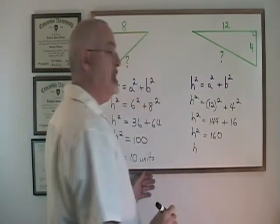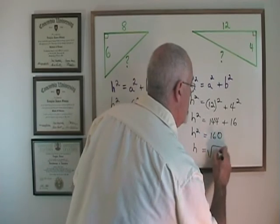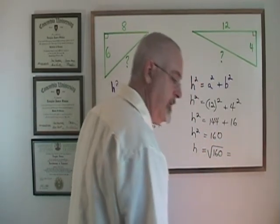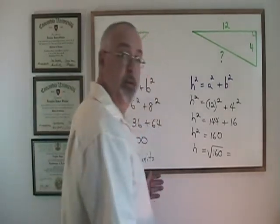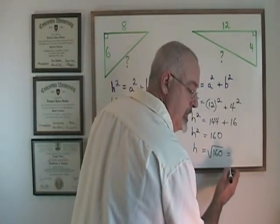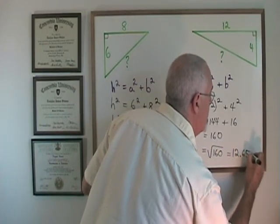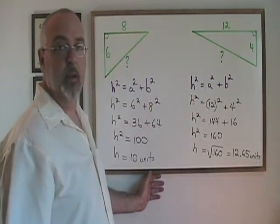So, if my hypotenuse squared is equal to 160, my hypotenuse is equal to the square root of 160, which is 12.64911, it continues. I will round it to the nearest hundredth, so therefore it is 12.65 units in length rounded to the nearest hundredth.